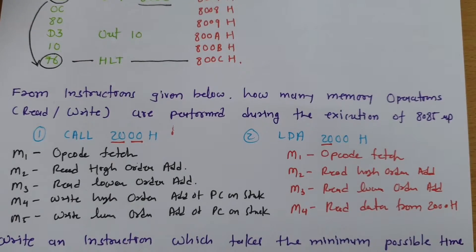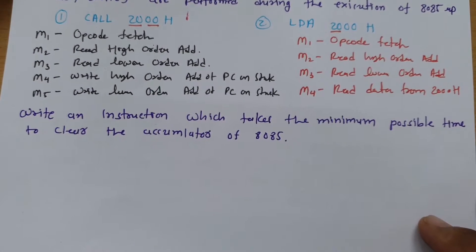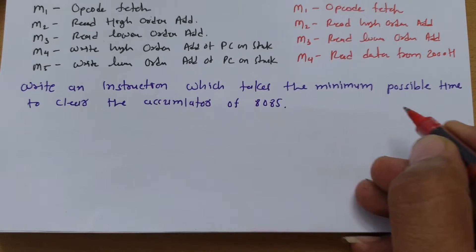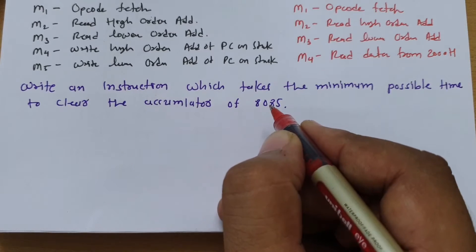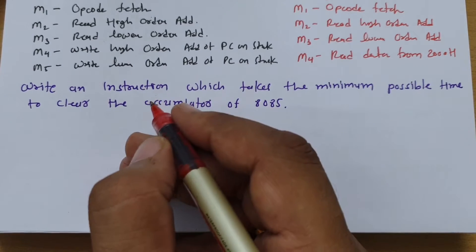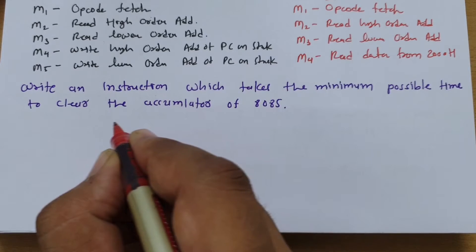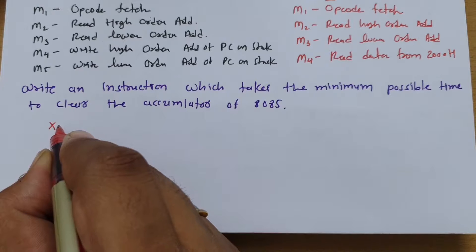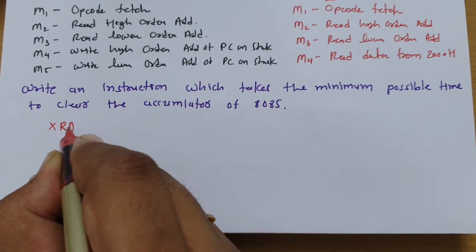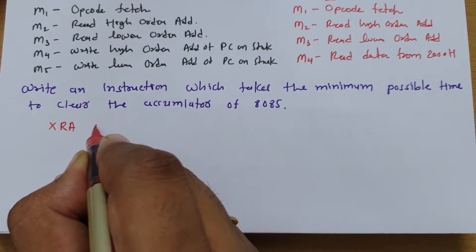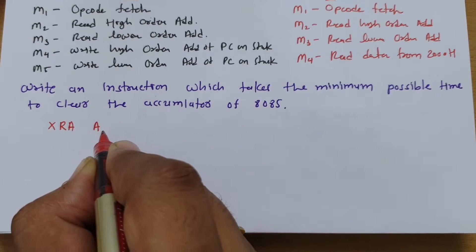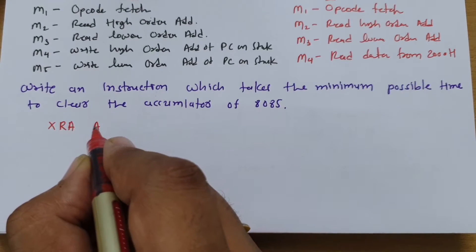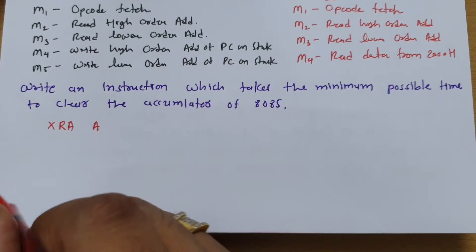One more question: write an instruction which takes the minimum possible time to clear the accumulator of the 8085. There are various ways to clear the accumulator. One way is XORing operation — XRA A, which means XORing A with A — and that will clear the accumulator.